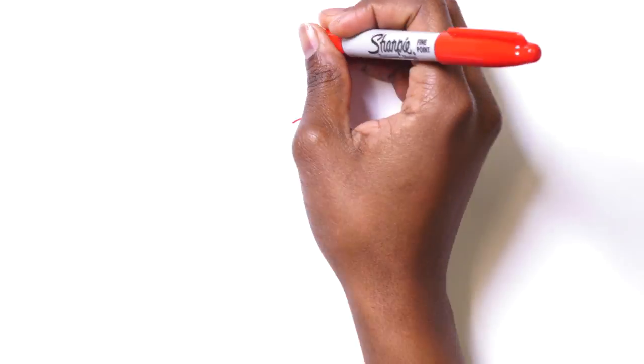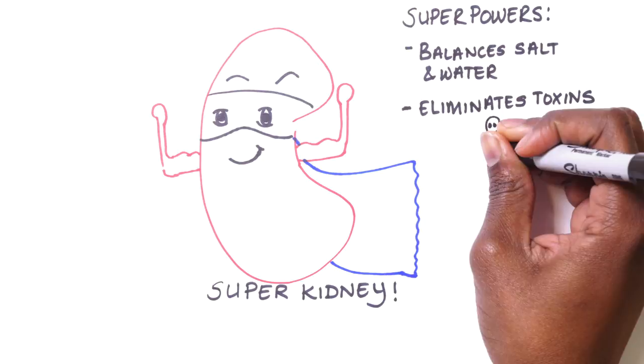Our kidneys are amazing. They begin to grow well before we are born and are completely developed before we take our first breath. Their main functions are to keep a careful balance of salts and water and eliminate toxins which could poison the body.